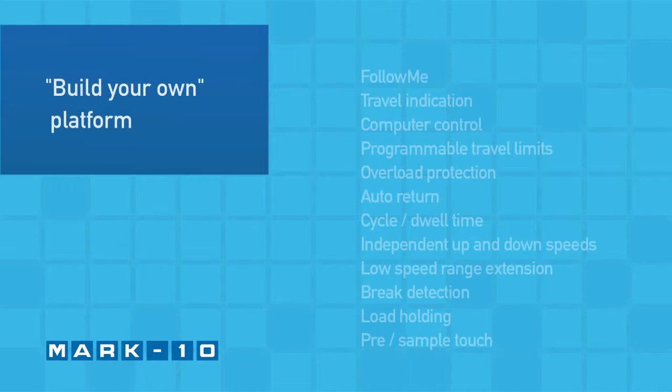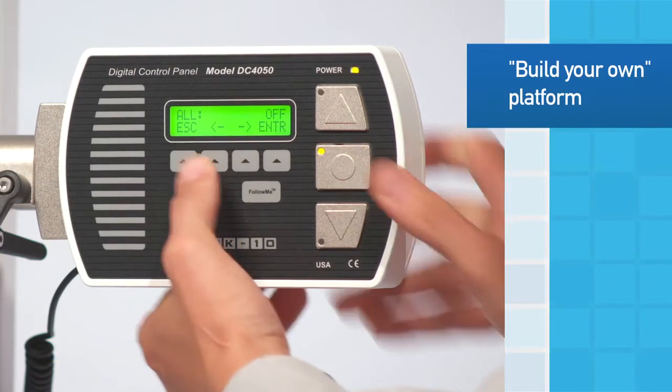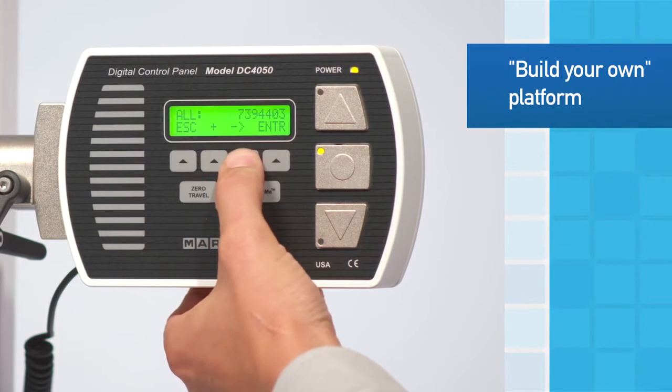Custom configure the ESM1500 to your needs and budget through its unique function configuration platform. Most functions not originally ordered can be enabled in the field by inputting an activation code.